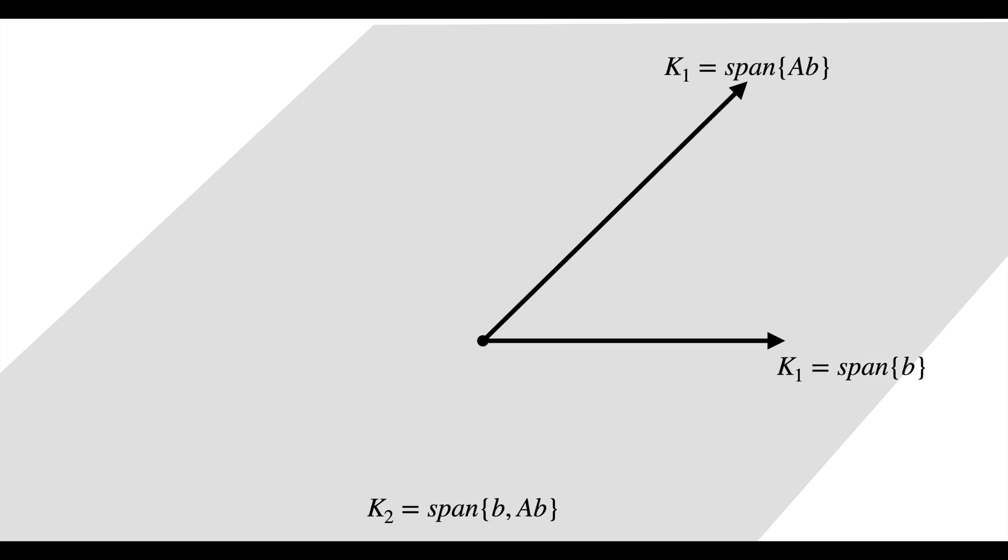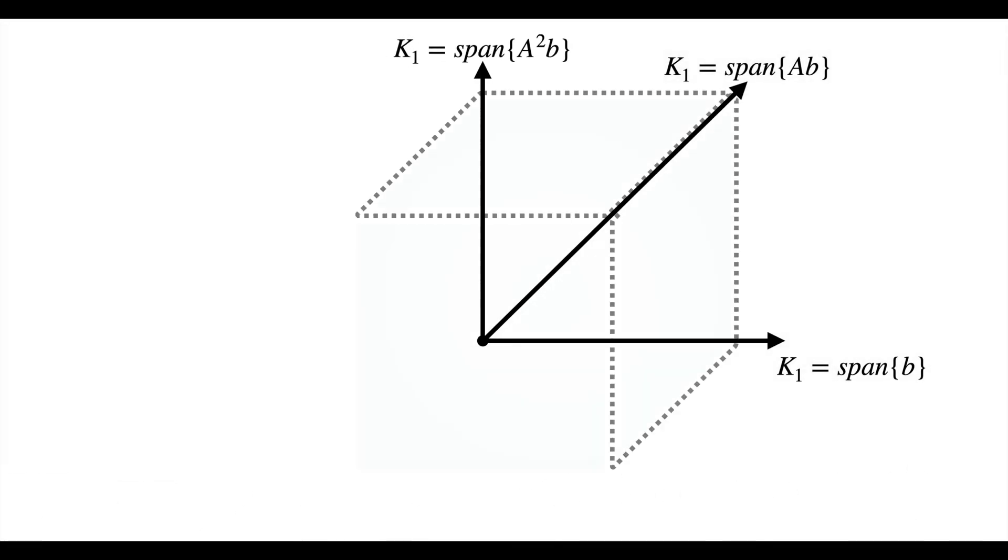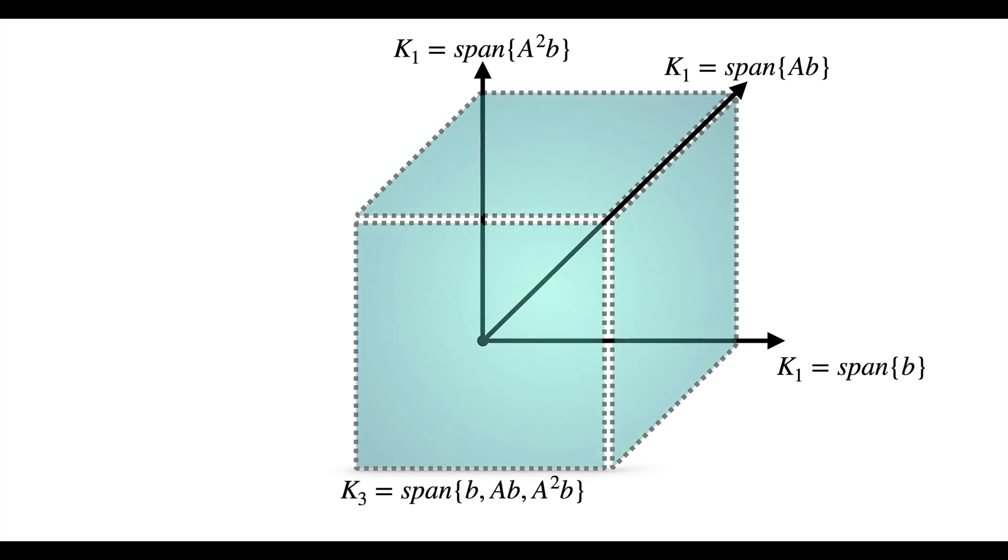Otherwise, we go to the next dimension to search for an answer that is K₃, the span of b, Ab and A²b, a three dimensional subspace in n dimensions and the same logic repeats till the n dimensional subspace in n dimensions or until we are satisfied.